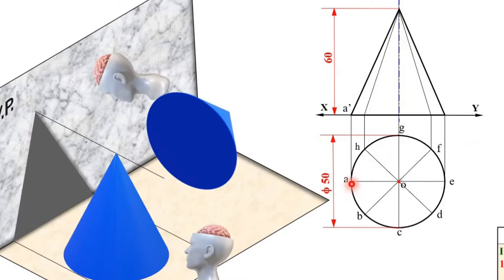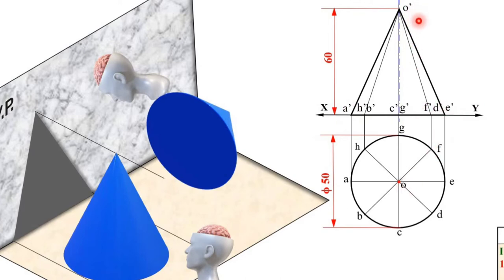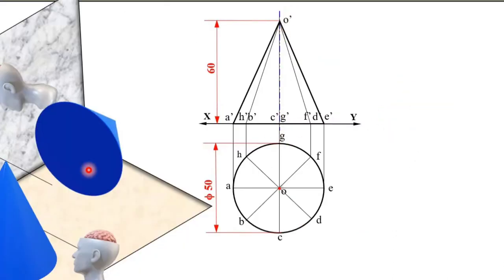Name the front view points as A dash, B dash, C dash, D dash, E dash, F dash, G dash, H dash, and O dash. This completes Stage 1. In Stage 2, you have to incline the axis such that the generator is parallel to HP and 15 mm above HP.